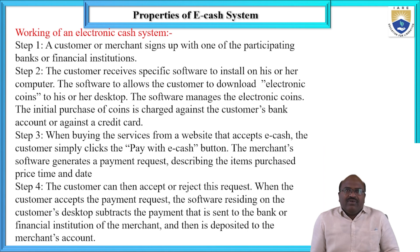Step three: when buying services from a website by accessing e-cash, the customer simply clicks the 'pay with e-cash' button. The merchant software generates an e-payment request describing the items purchased, the required time, the purchase price, and date. All those things are available in the properties of the e-cash system.